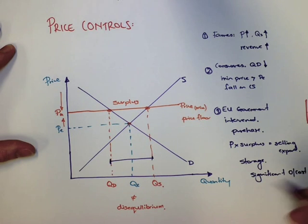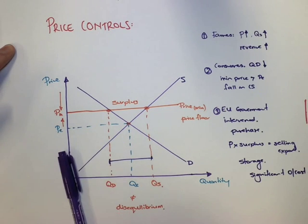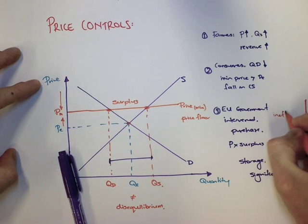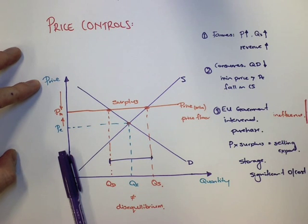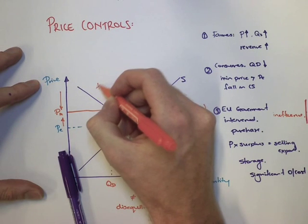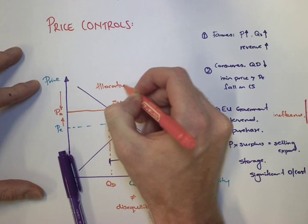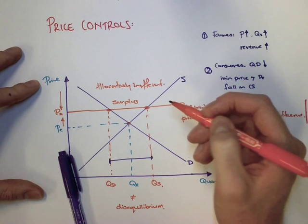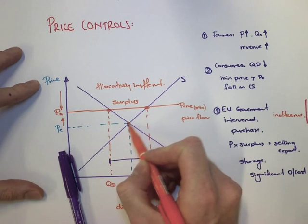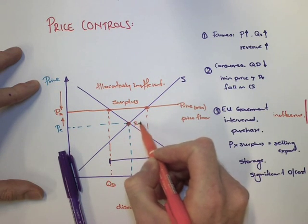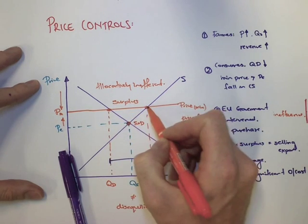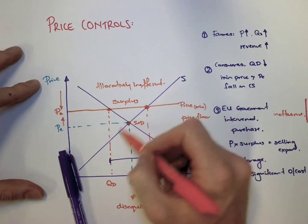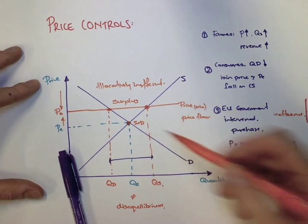This thing here is the biggest example of what we call inefficiency, and we say that this market is allocatively inefficient. The efficient point is in the middle when supply equals demand, and because of what the government's done, we're left with this inefficient point which is way up here. It is neither what consumers desire at the same point.